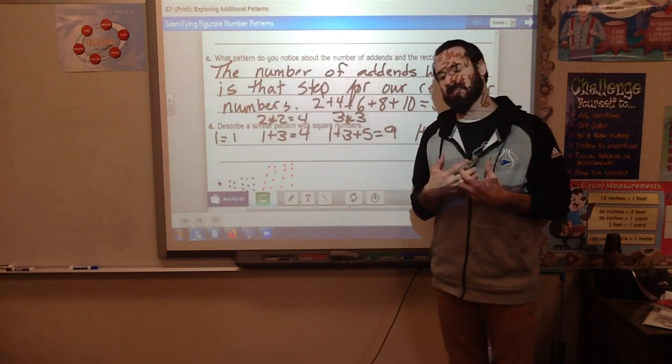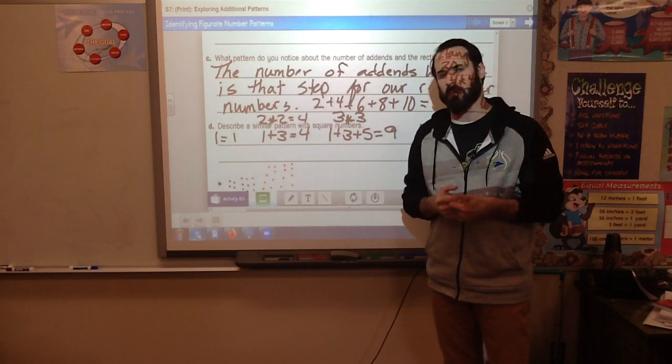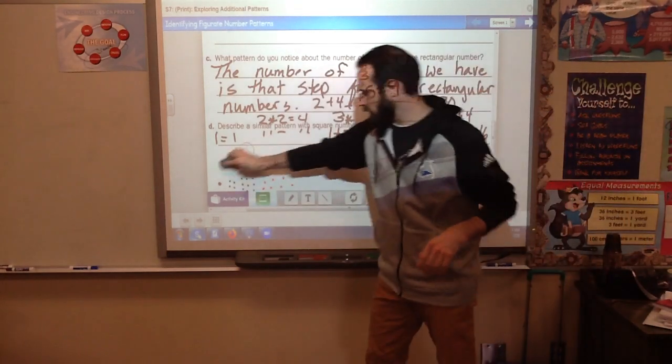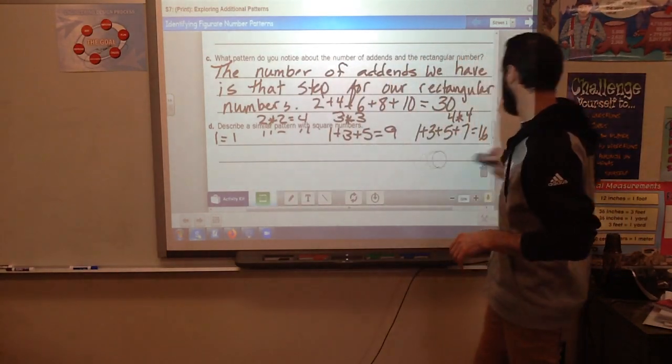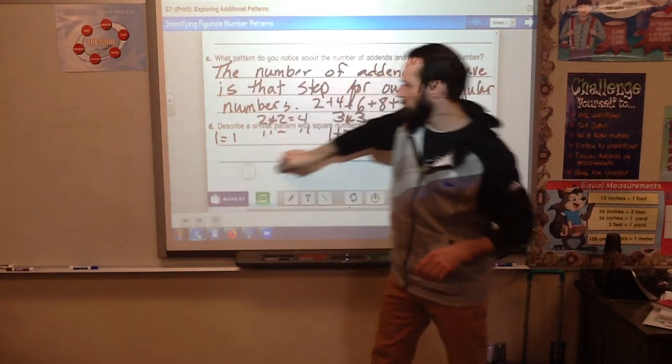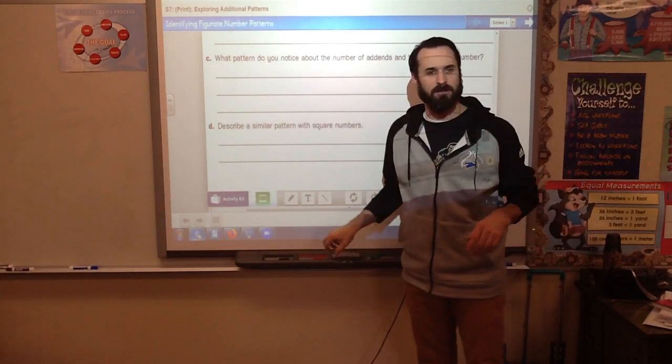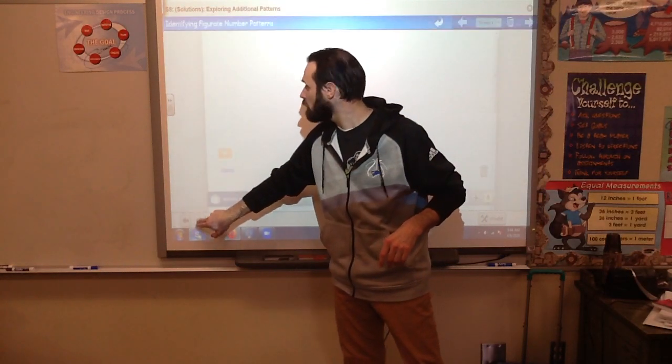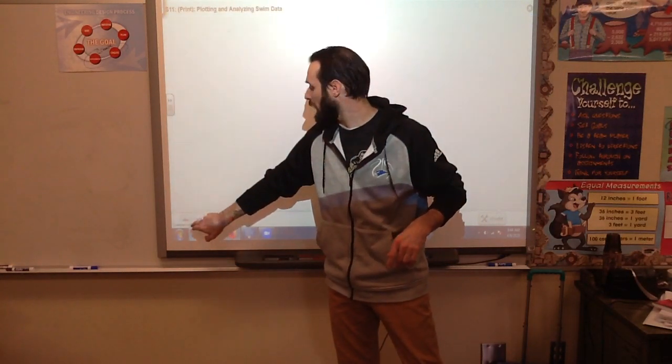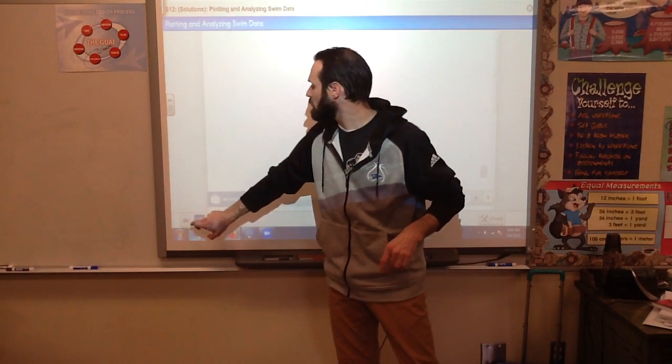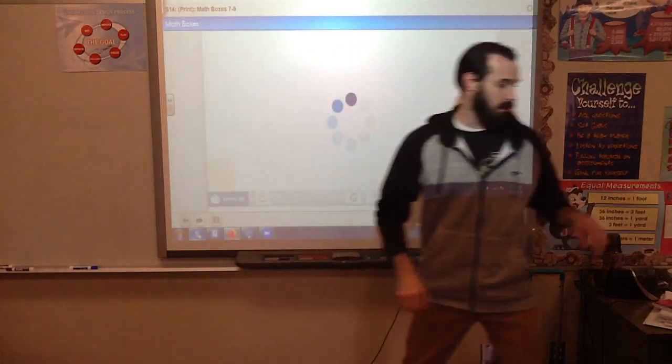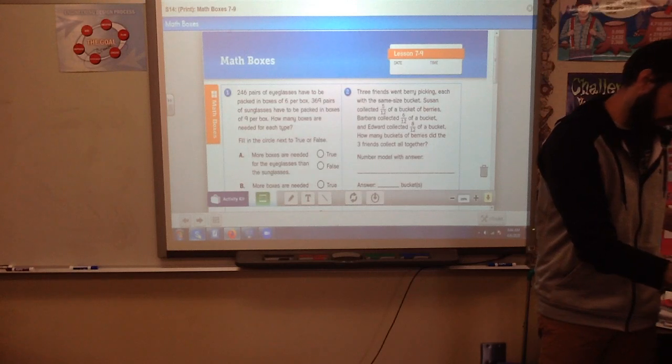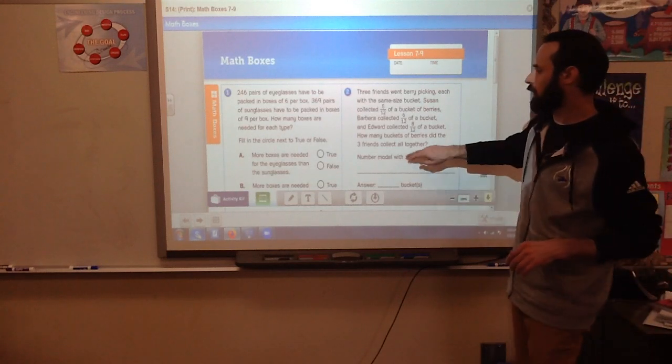Where when we added all the even numbers, each subsequent even number we added made a rectangular array. I know that this is probably fast and it's new. Don't worry about it too much. We'll do probably a review sheet sometime this week on this. Your assignment for today is your math boxes, and math boxes today are on page 254.